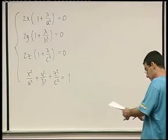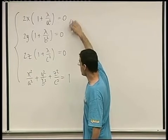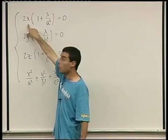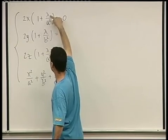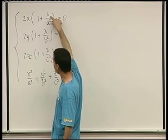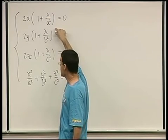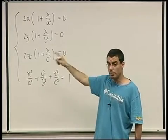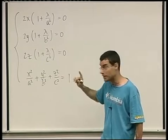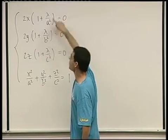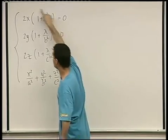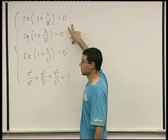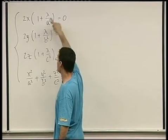What are going to be the solutions? For each equation to be zero, I have two options: either the variable is zero, or the parenthetical factor is zero by choosing an appropriate value of lambda. For example, if lambda = −a², then the first factor is zero. But since a, b, and c are all different, lambda cannot make more than one of these factors zero at once. So in any event, either x, y, and z are all zero, or two of them are zero and the third is determined by lambda.